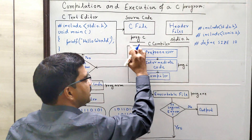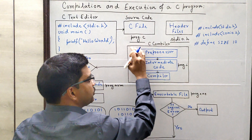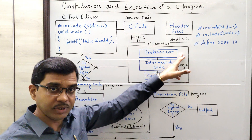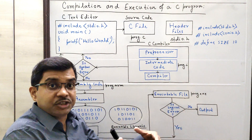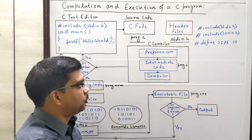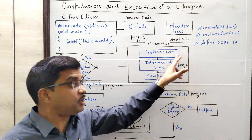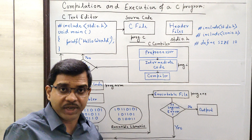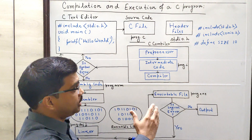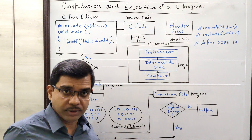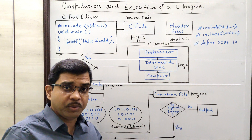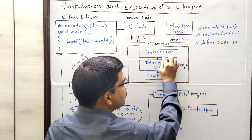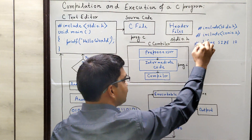Now look at this — this entire thing is the compilation process. But before compilation for C programming language, another thing happens that is called preprocessing. Who will process it? The preprocessor. A preprocessor is another program, like a compiler, which will actually process the entire source code and after that it will pass the necessary directives to the compiler. So what will the preprocessor do? Any line that starts with a hash symbol will be processed by the C preprocessor.